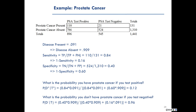The reverse question is: what is the probability you don't have prostate cancer if you test negative? The formula uses specificity 0.4 multiplied by 0.909 in the numerator, divided by that same term plus 1 minus sensitivity (0.16) multiplied by the prevalence (0.091). The result is 0.96 — a 96% chance that you don't have prostate cancer if you test negative.